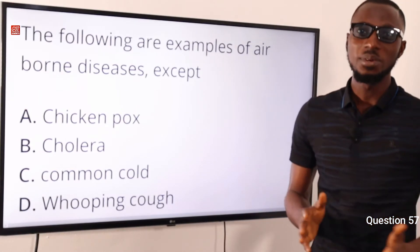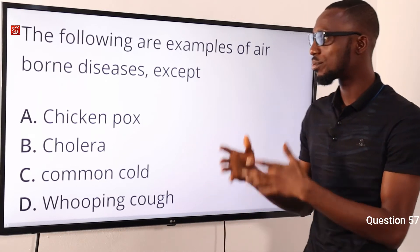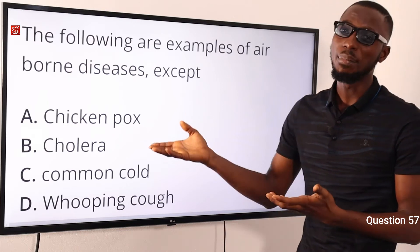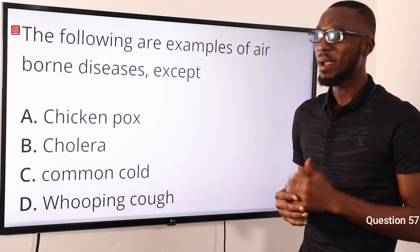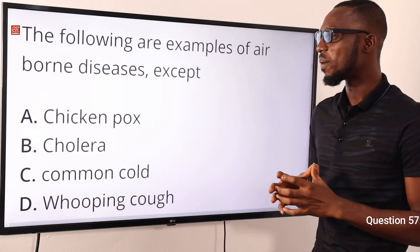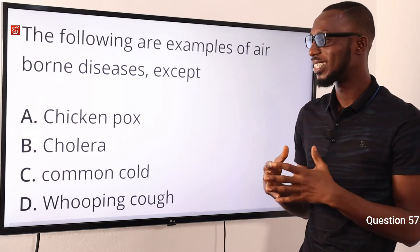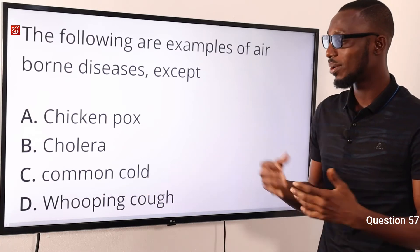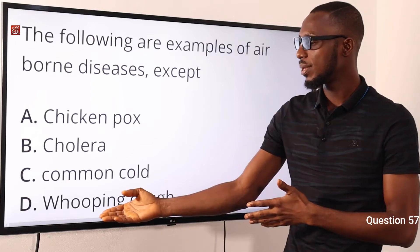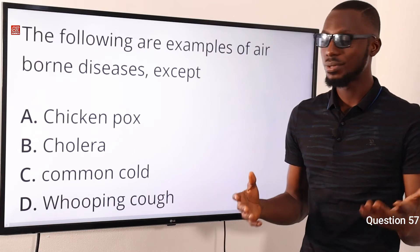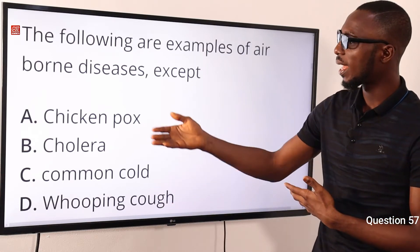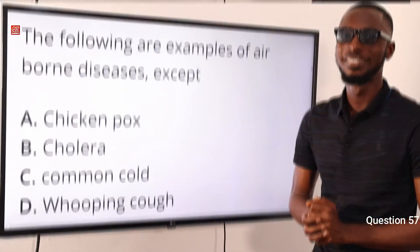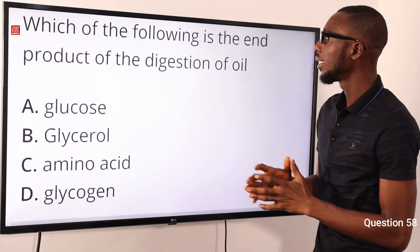Number 57: the following are examples of airborne diseases except what? Chickenpox — the pathogen is the herpes virus, this is airborne and also spread by close contact. Cholera is caused by Vibrio cholerae, a bacterium — transmitted through contaminated food or water, not airborne. Common cold is caused by a variety of viruses and is airborne. Whooping cough is caused by Bordetella pertussis and is airborne. So the exception is option B for cholera.